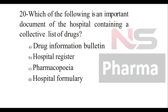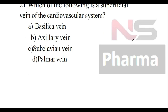Question number twenty: Which of the following is an important document of the hospital containing a collective list of drugs? Option A: Drug information bulletin, Option B: Hospital register, Option C: Pharmacopoeia, Option D: Hospital formulary. The answer is hospital formulary.